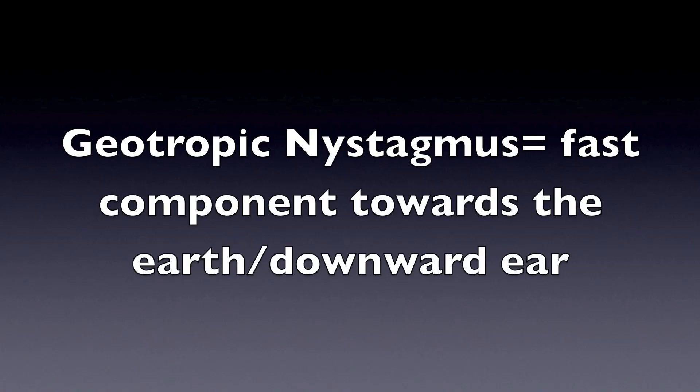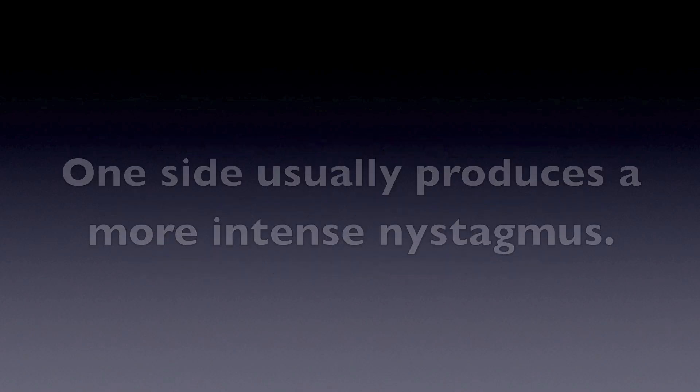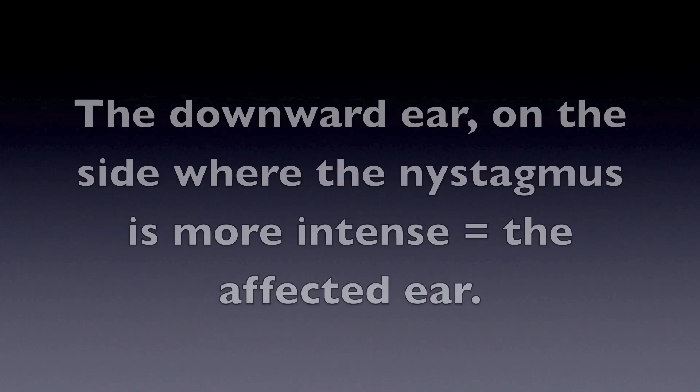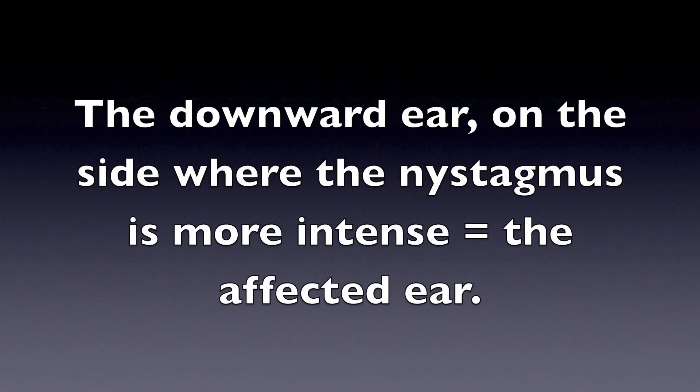In geotropic nystagmus, the fast component will be towards the earth or the downward ear. One side usually produces a more intense nystagmus. The downward ear on the side where the nystagmus is more intense is considered to be the affected ear.